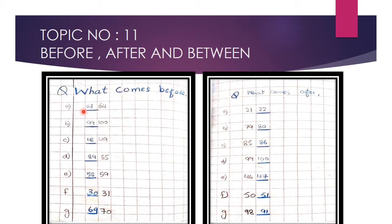This part is 64. Before 64 is 63. Before 100 is 99. Before 49 is 48. Before 85 is 84. Before 59 is 58. Before 31 is 30. Before 70 is 69.